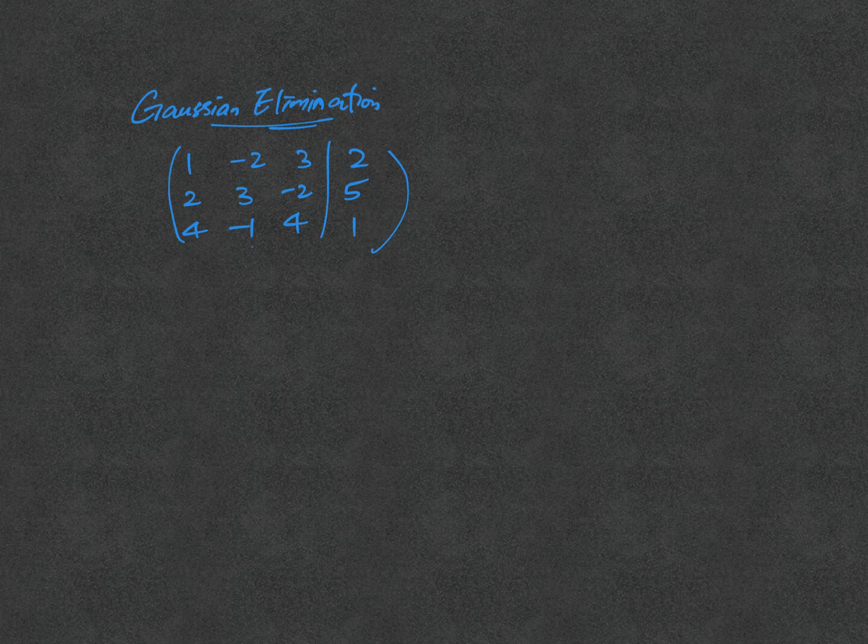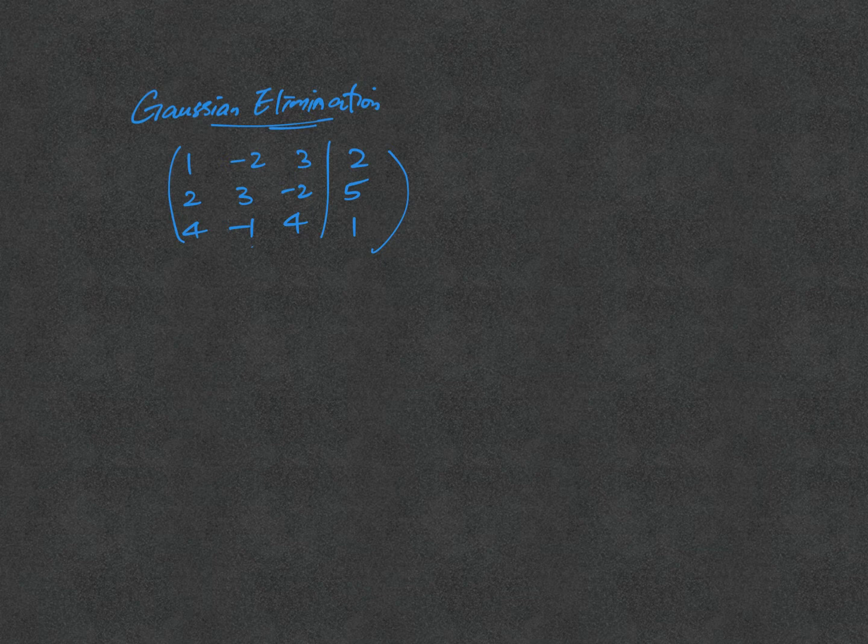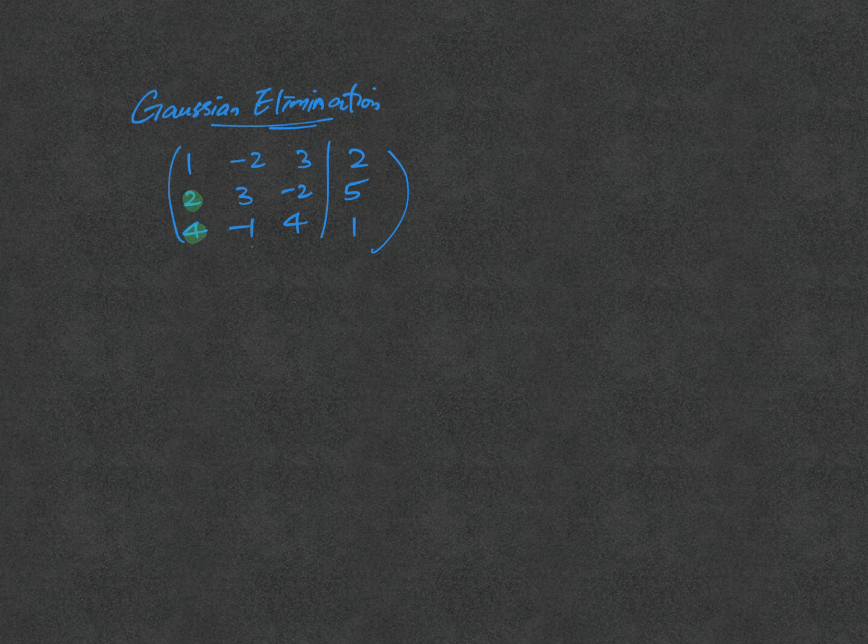We start the question immediately from an augmented matrix. Here it is. First of all, we will be focusing on the first two numbers, 2 and 4, in which we want to make it a 0.